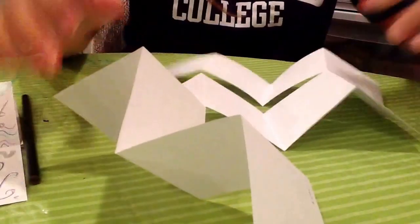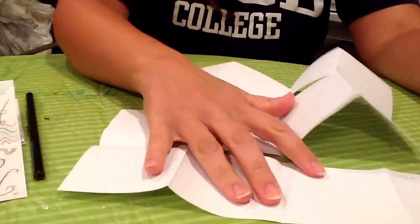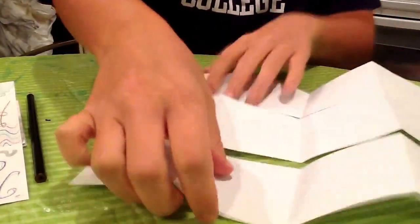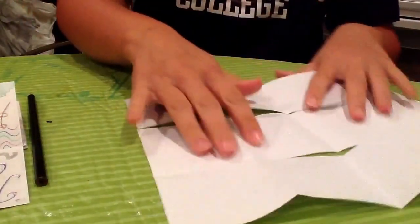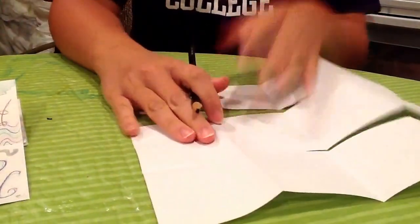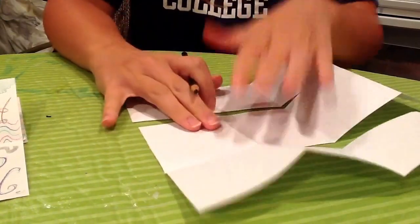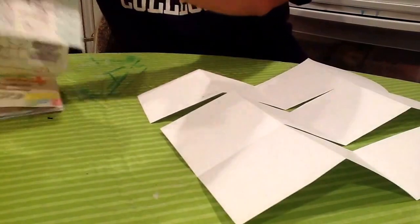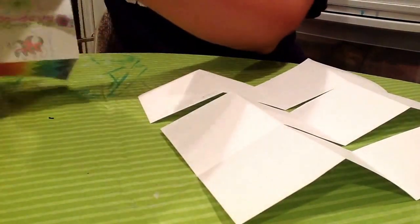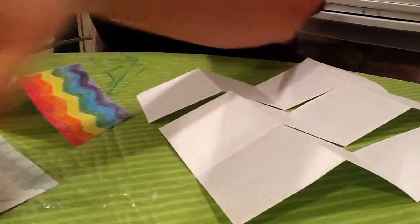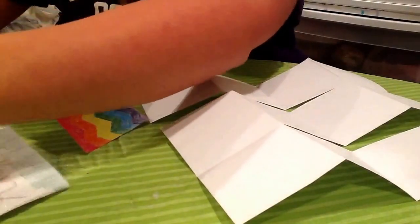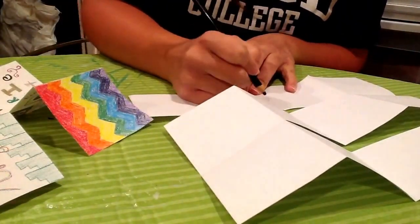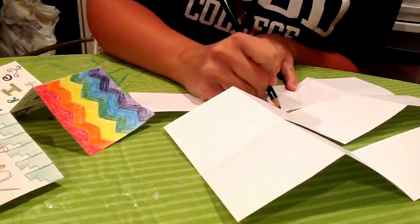You're going to flip it over onto the back and you're going to see where you wrote cover and back. Each other page is going to be one principle of design and they're all going to be written facing the same way. So again, you just want to make sure that you write them down so that you know which ones you're going to put where. Alright, so I'm going to go in the same order I did when I made my first book. Emphasis.